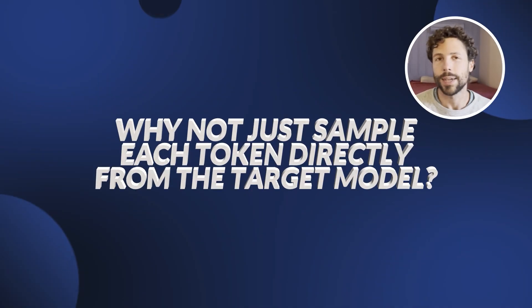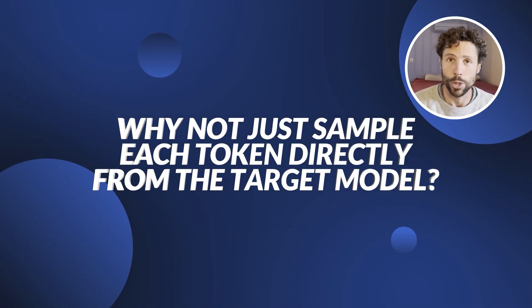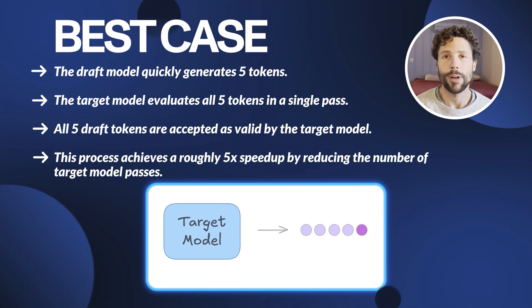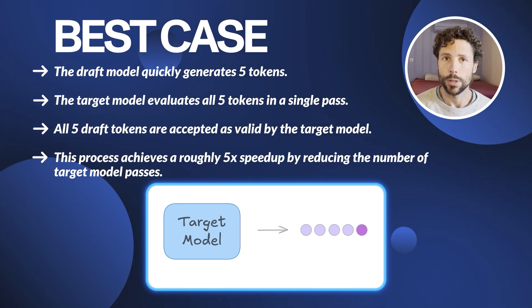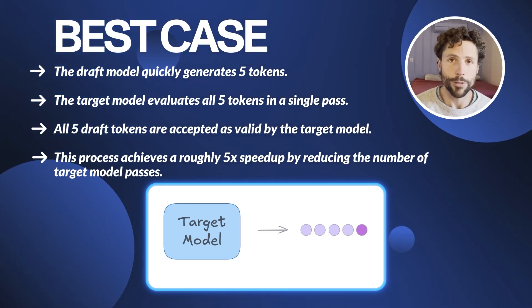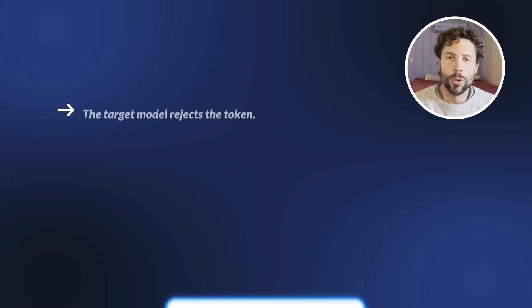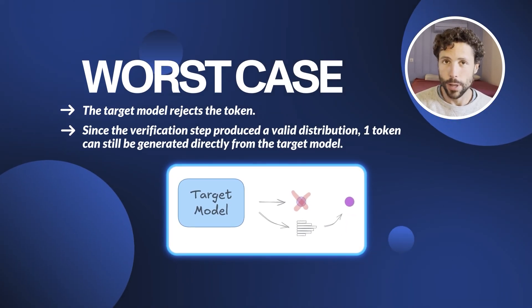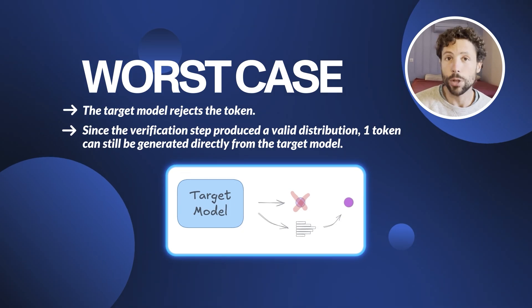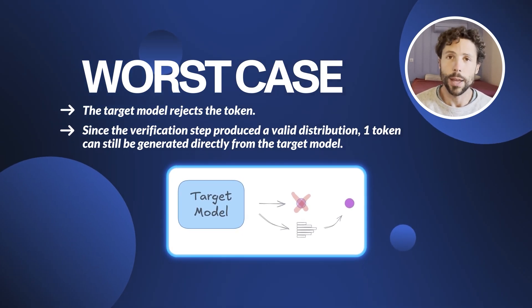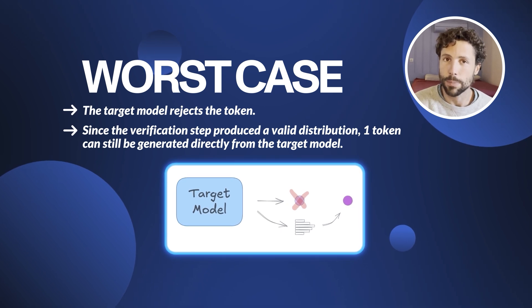You may ask, why do we do this cumbersome three-step process instead of just sampling each token directly from the target model? To understand why this works, let's analyze the best and worst case scenarios at each iteration. In the best case, all five draft tokens are accepted as valid by the target model, generating five tokens per target model pass. The computational cost of the draft model is considered negligible compared to the target model, so this gives roughly a 5x speedup over the baseline. In the worst case, even if the very first token is rejected, one token can still be generated using the target model's distribution. The cost is essentially the same as the baseline — one target model pass per one generated token. The general expected case will always be somewhere in the middle, so between a 1x and 5x improvement, and this is where the 2x to 3x average speedup in the reported experiments comes from.